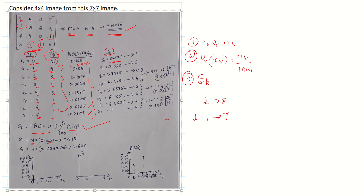Since we use cumulative summation, for S1 we take the previous PR value plus the current one: 7 × (0.125 + 0.25) = 2.625. For S2: 7 × (0.125 + 0.25 + 0.1875) = 3.9375. Similarly, we solve for S3, S4, S5, S6, and S7 using the same cumulative approach.